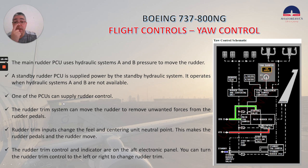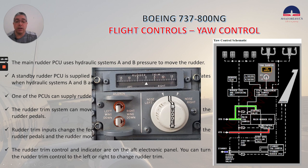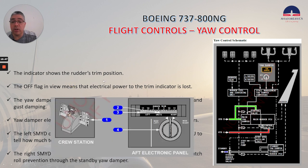One of the PCUs can supply rudder control. The rudder trim system can move the rudder to remove unwanted forces from the rudder pedals. Rudder trim inputs change the feel and centering unit neutral point, which makes the rudder pedals and the rudder move. The rudder trim control and indicator are in the aft electronic panel. You can turn the rudder trim control to the left or right to change rudder trim. The indicator shows the rudder trim position, as you can see here. The AF flag in view means the electrical power to the trim indicator is lost.